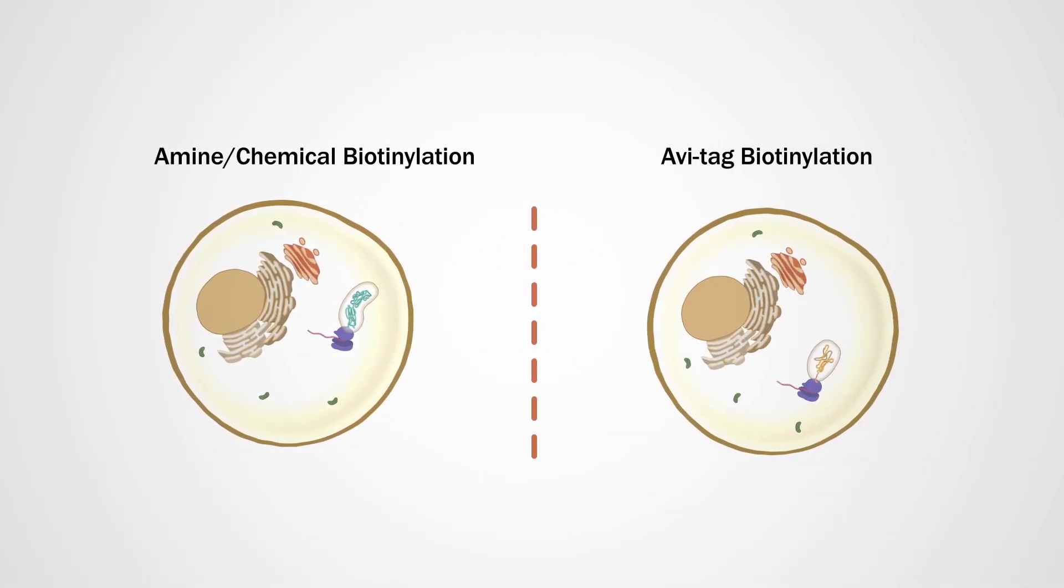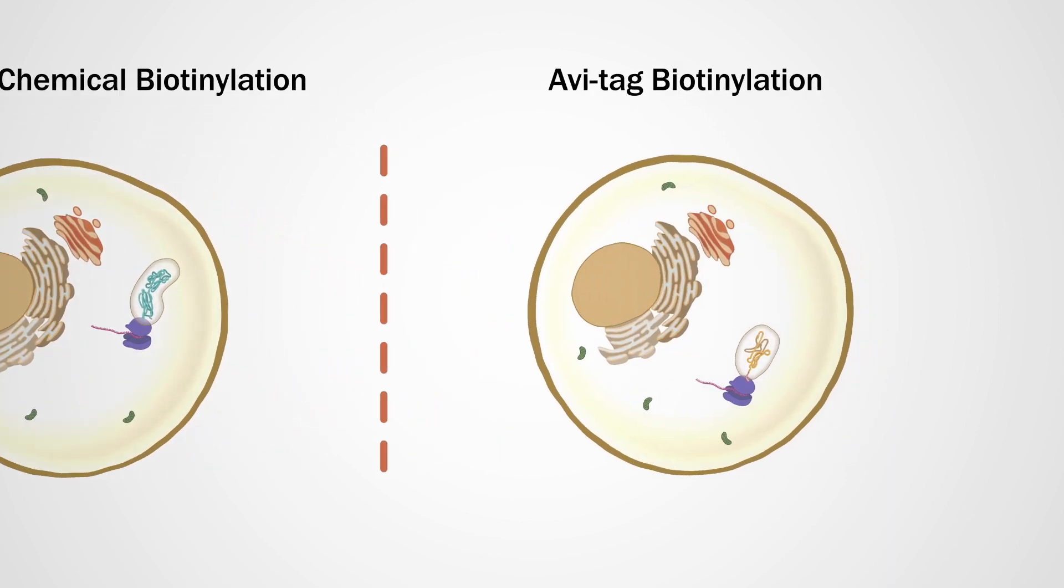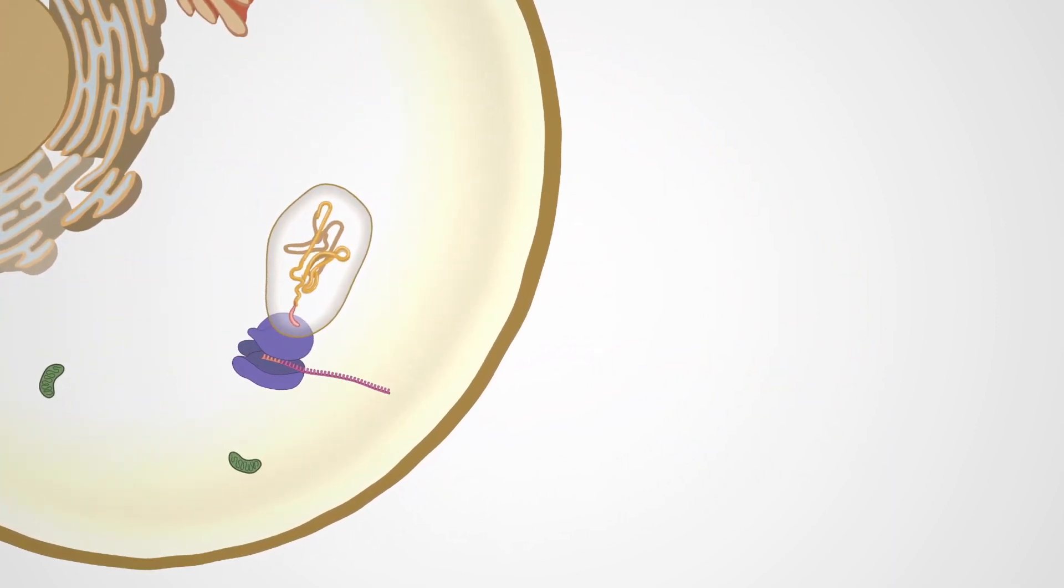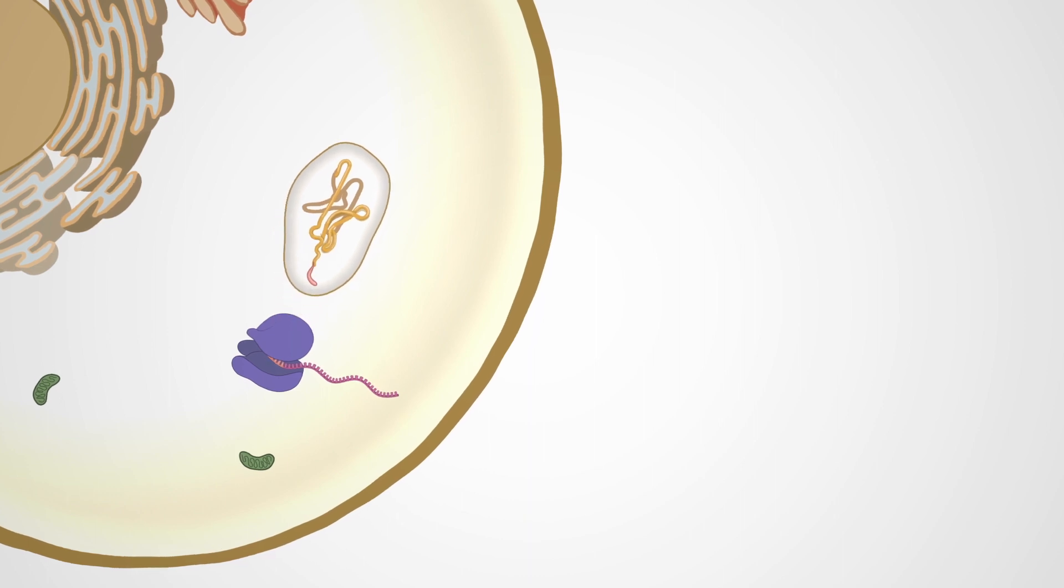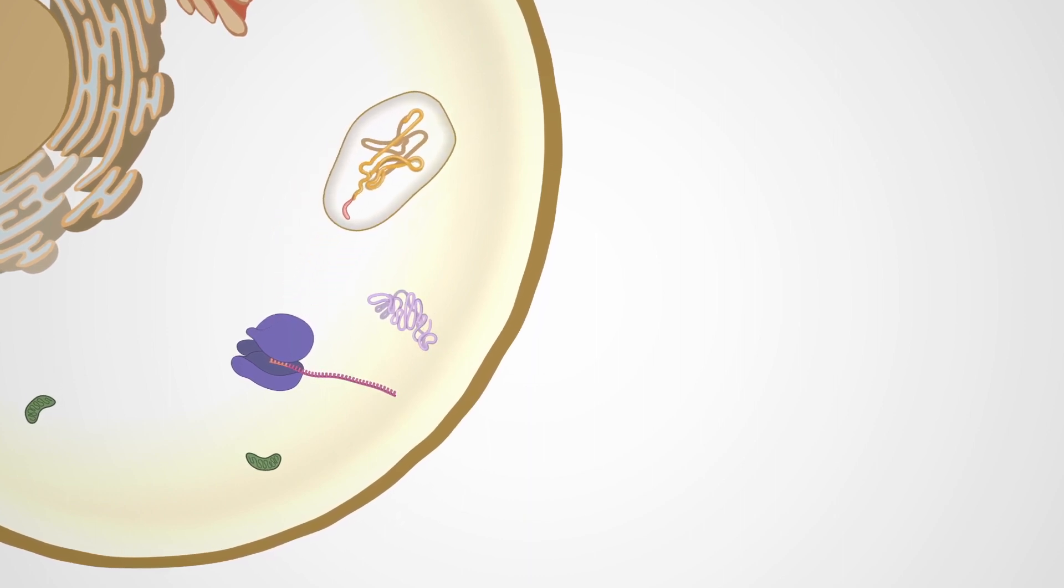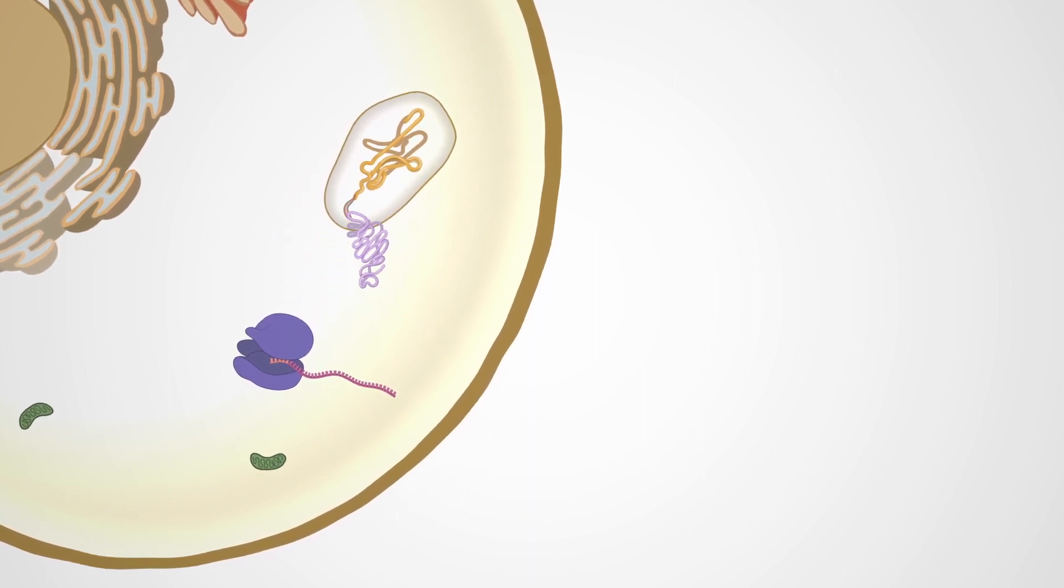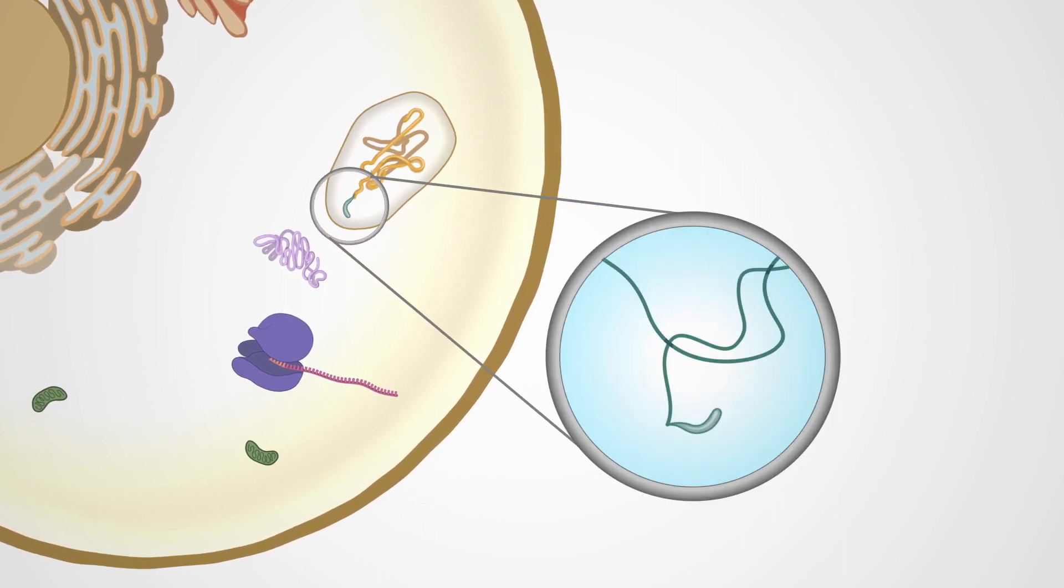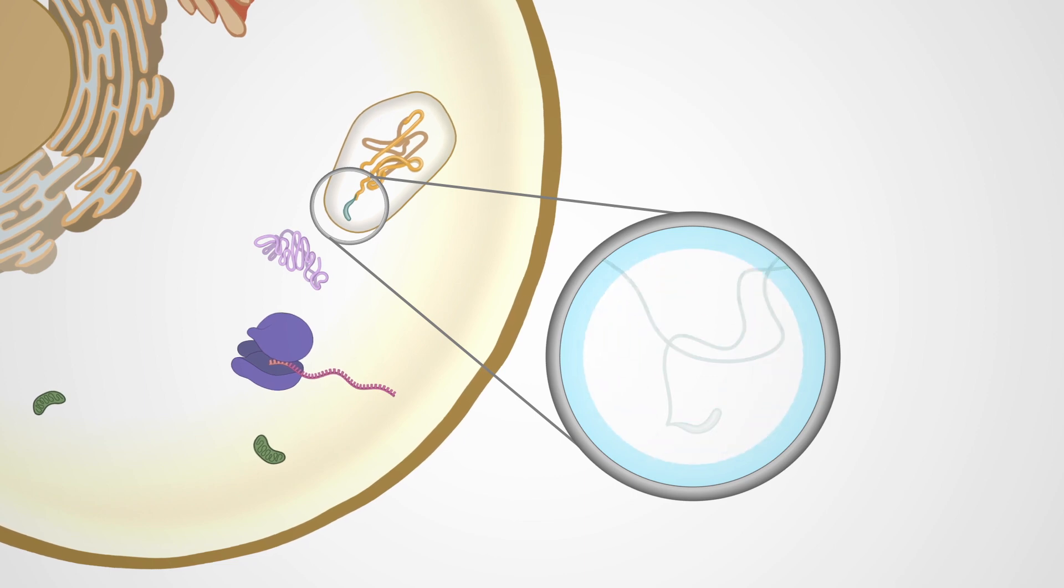For our aviTag biotinylated proteins, we insert an expression-optimized aviTag DNA sequence within the coding region of the expression vector. This produces an aviTag recombinant protein that is recognized by the E. coli birA ligase, which enzymatically biotinylates the lysine residue contained within the 15 amino acid aviTag.